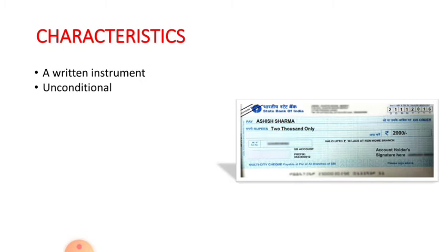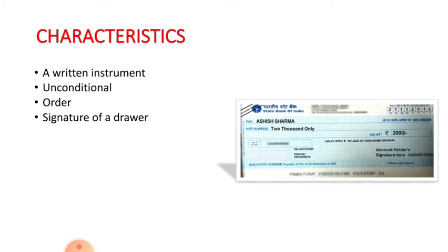It is unconditional. A check should be unconditional. If any kind of condition is attached for the payment of the amount then the check becomes invalid. A check is an order to the bank to pay the specified amount. A check must be signed by the drawer in the manner in which the drawer has signed as a specimen signature in the bank's record.